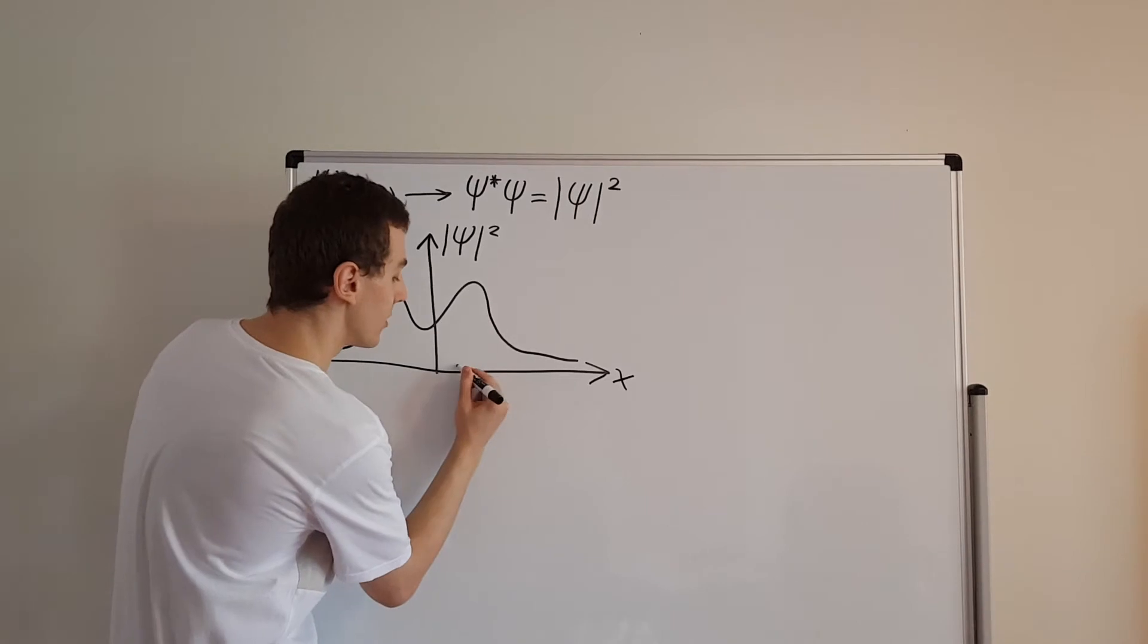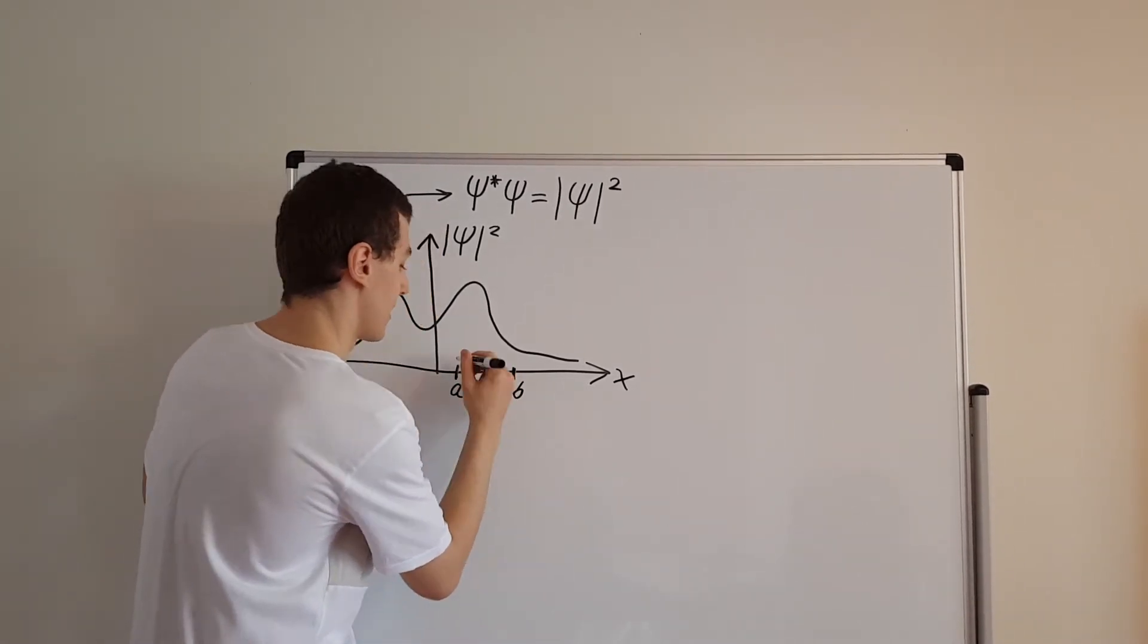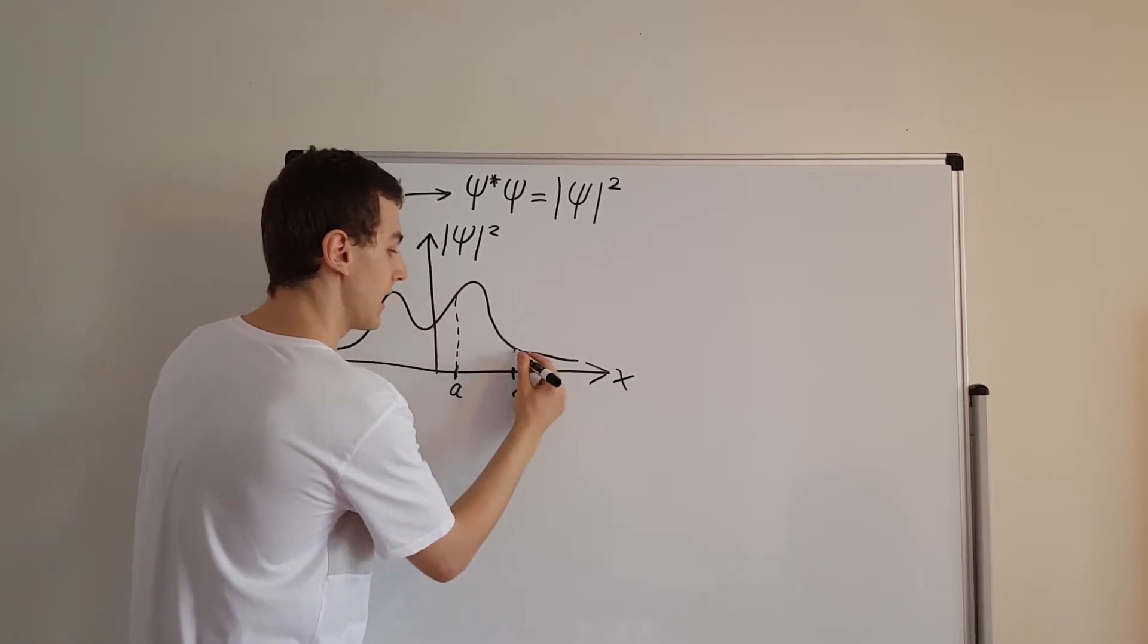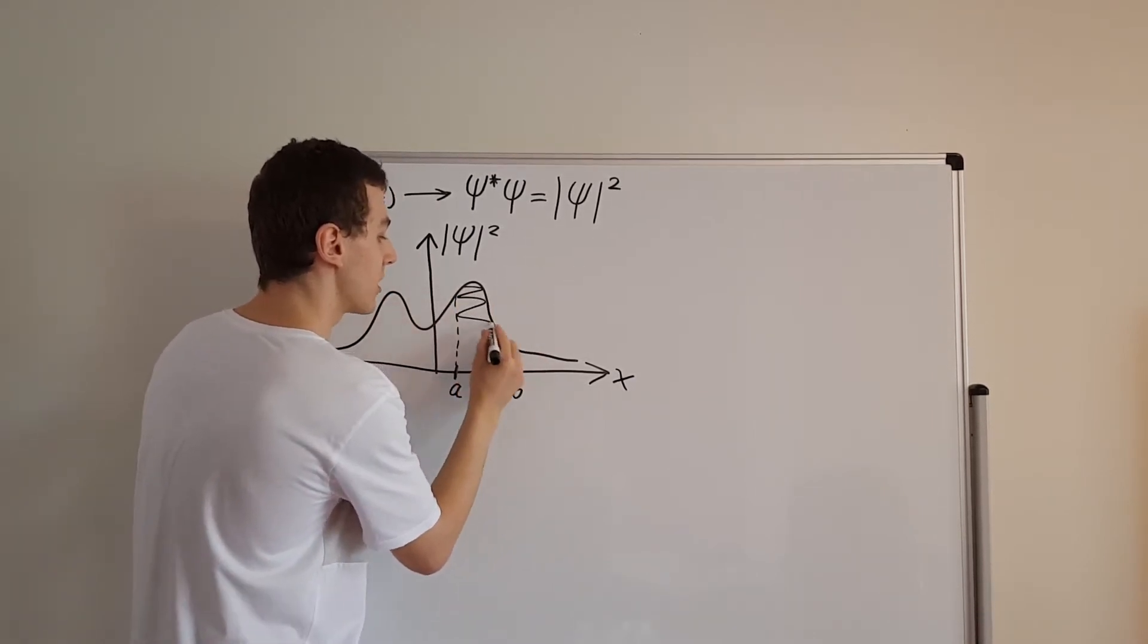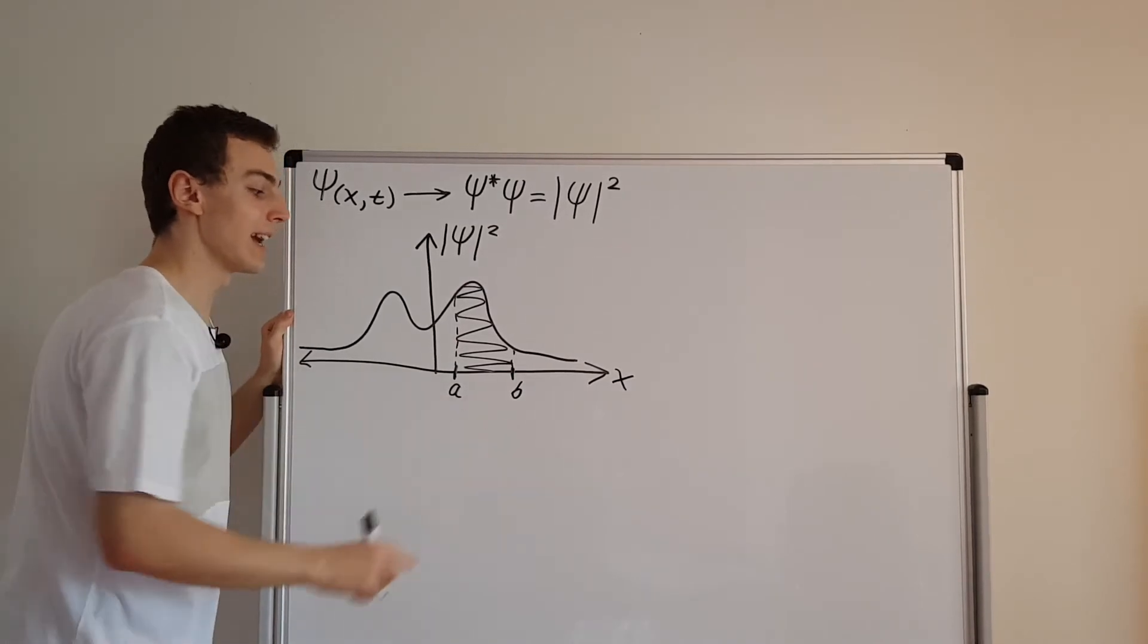So if you take some interval a to b and you consider the area under the curve, that is actually the probability that you're going to find a value in between a and b.